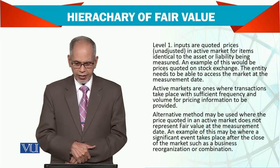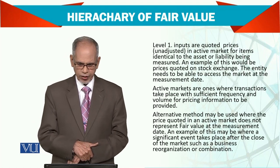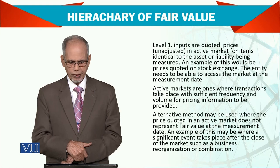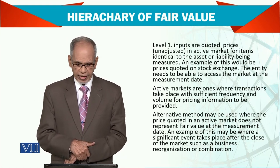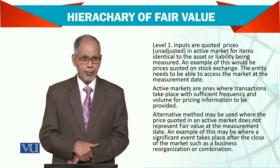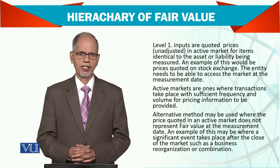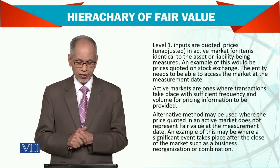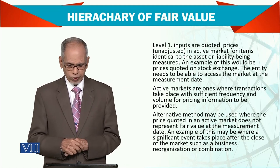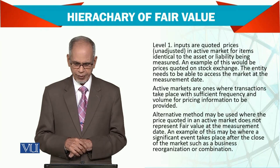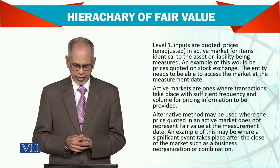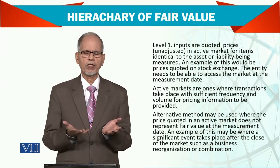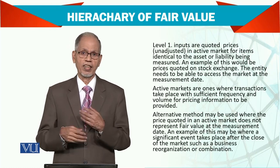For more detail on Level 1: inputs are quoted prices, unadjusted, in active markets for items identical to the assets and liabilities being measured. An example would be prices quoted on stock exchanges. The entity needs to be able to access the market at the measurement date. Active markets are ones where transactions take place with sufficient frequency and volume for pricing information to be provided. An alternate method may be used where the quoted price in an active market does not represent fair value at the measurement date — for example, where a significant event took place after the close of the market, such as a business reorganization or combination.